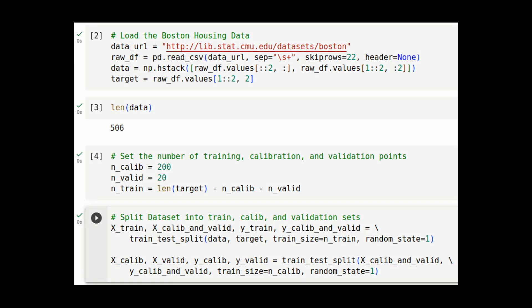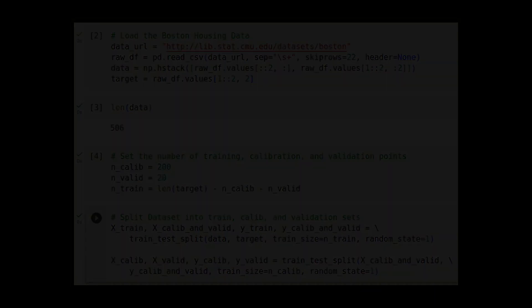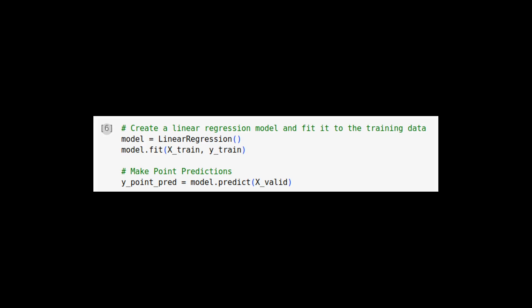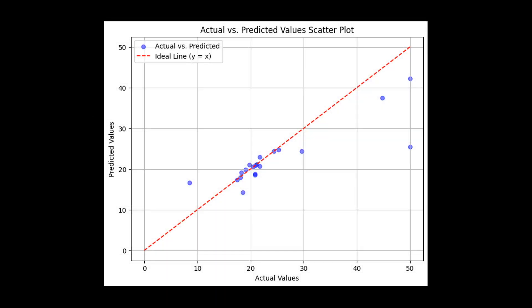The Boston housing dataset has about 500 data points. Let's say we use 200 of those points for calibration and only 20 for validation. The rest is reserved for training. The reason I have used such a low number of validation points is to keep the graphics that I'm about to show less congested. Let's kick things off by constructing a point predictor and looking into its results.